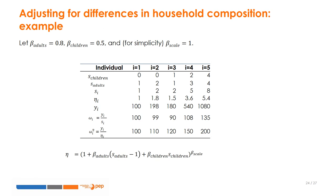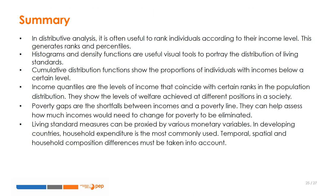For example, while the third individual is poorer than the second with the per capita measure, it is the opposite with the adult equivalent measure, as the latter captures the lesser needs of children.